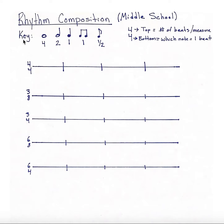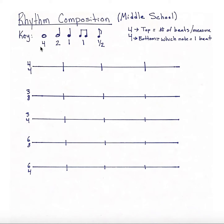At the top of your worksheet you'll see a key which gives you values for different notes as well as a key for the time signature. So first we'll go over the key for the notes that we know. Just as a quick review, you have a whole note which is worth 4 beats, a half note which is worth 2 beats, a quarter note which is worth 1 beat, and an eighth note which is worth half of a beat. A beamed eighth note is two of these put together — half plus a half — which equals 1. So our beamed eighth note is equal to 1 beat. These are the notes that you can use today.